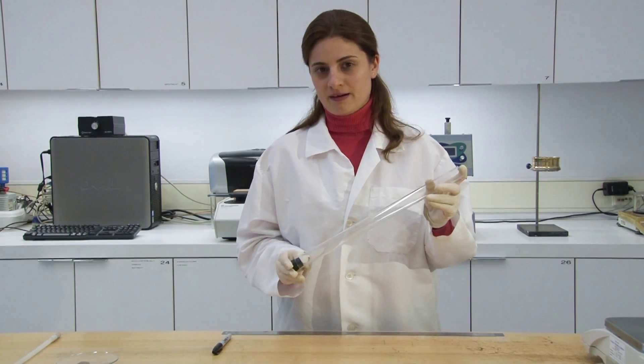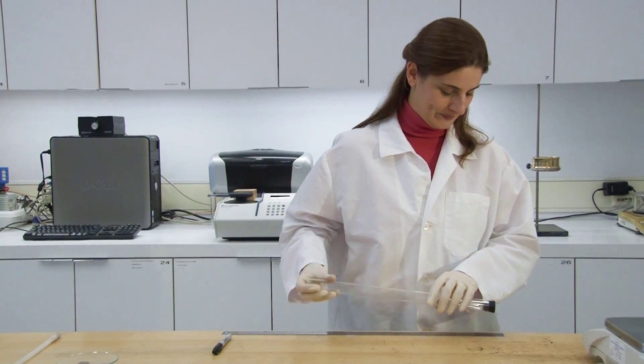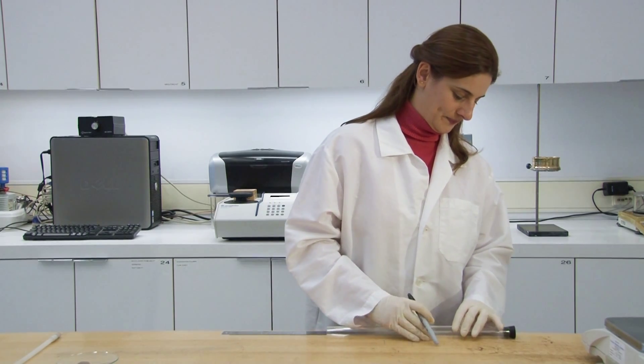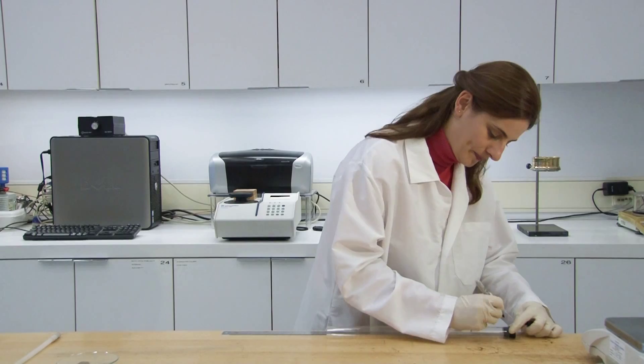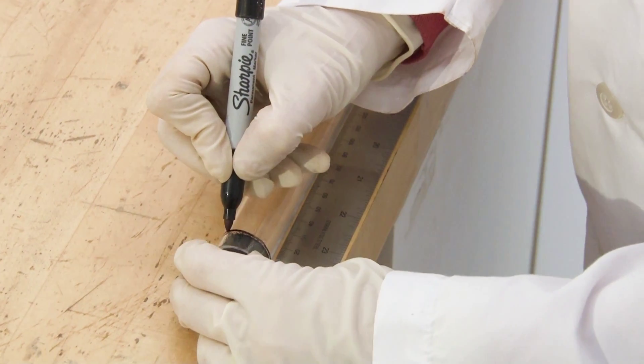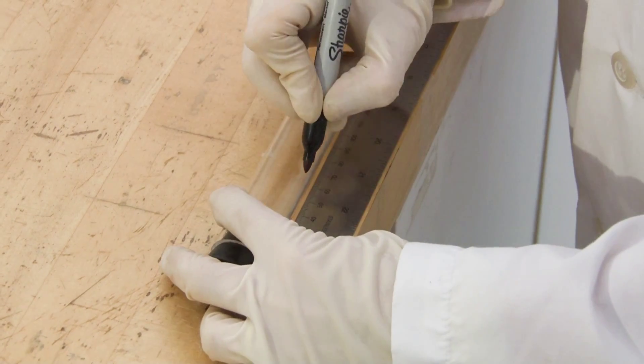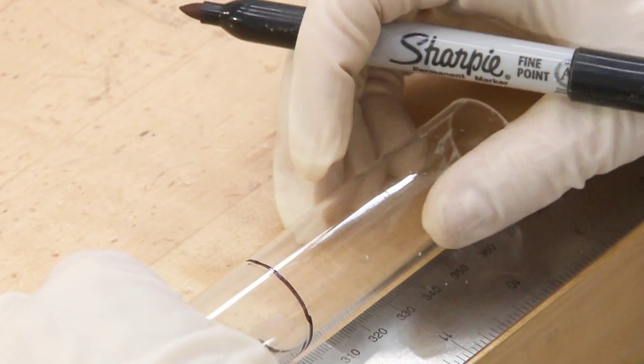Now I will begin marking the column. Mark columns at 50 millimeter intervals using a permanent marker starting at the bottom wire mesh level. Mark the position of the wire mesh disc as the 0 level. Mark up to a height of 300 millimeter.